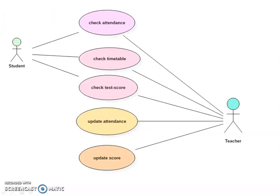Here is a simple example. Here the student and teacher are two actors. And the use cases are five use cases or functionalities are here: check attendance, check timetable, check test score, update attendance, update score. The student is connected to three modules, three use cases. He can check the attendance, he or she can check timetable, he or she can check the test score.